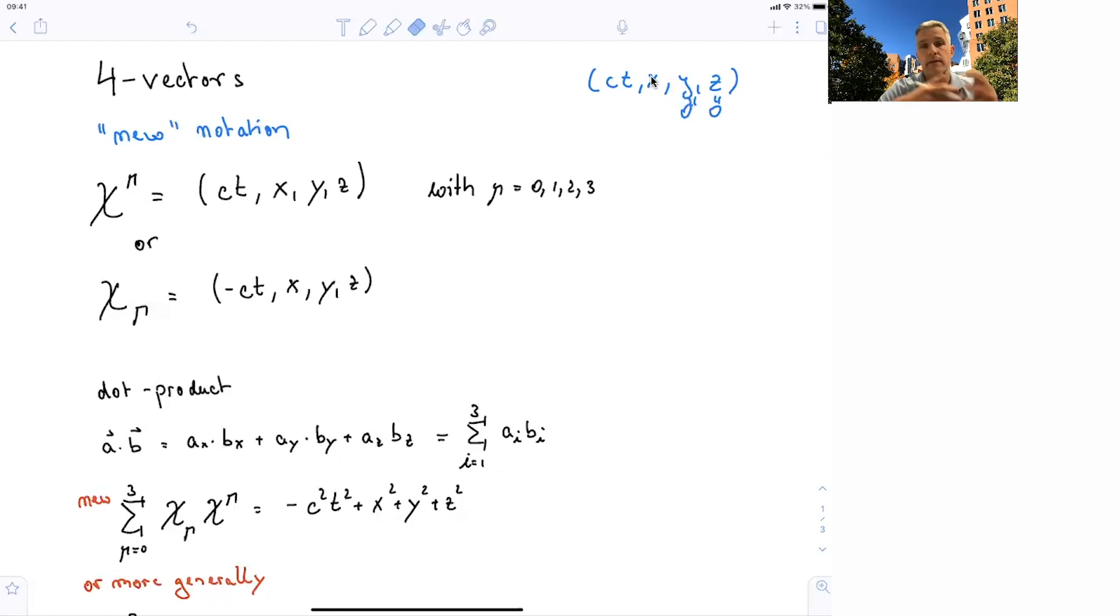So as a starting point, you can just simply say we have this new four-vector. The zeroth component is the time, or time times the speed of light. And then the first, second, and third components are the spatial components x, y, and z.